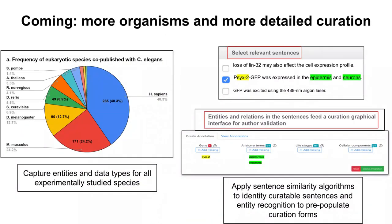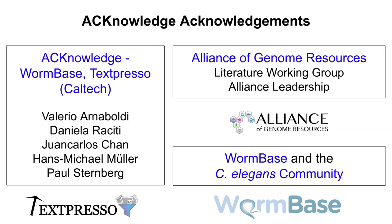We recently received funding from the National Library of Medicine to further develop Acknowledge in two key ways. First, we increasingly see papers publishing experiments on multiple organisms, including all organisms now part of the Alliance of Genome Resources, so we will expand the pipeline to extract data for these additional organisms. Second, we are testing sentence similarity methods to extract relevant sentences for curation that will pre-populate forms for authors to perform fact extraction. Thank you to everyone involved, including our group at Caltech, the Alliance of Genome Resources, WormBase, and the C. elegans community.